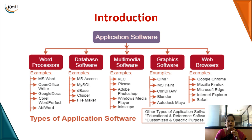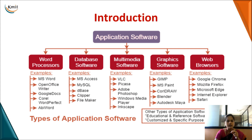Now we move on to application software, where depending upon the purpose or the utilization of the user, we have different types of application software customized to a particular application. If the user wants to operate on text, we have different types of word processors; if he wants to create tables, we have database software; if he wants to work with images, audio and videos, we have multimedia software and graphics software such as Paint. We even have web browsers — but make it very clear, this particular application software will not work on its own.